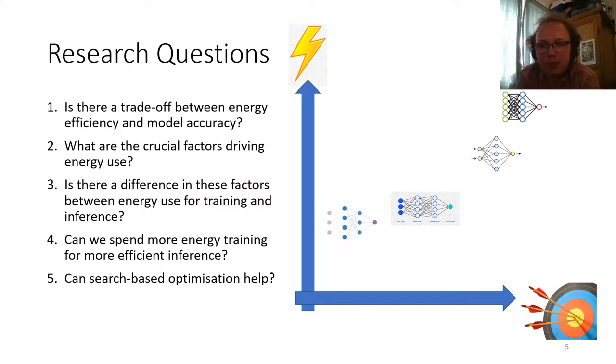So in this study, then we formulated five questions that we really wanted to answer. And the first one was just whether there is a trade off between energy efficiency and accuracy, whether we've got something like the cartoon plot that I've given there, where we go from low energy, low accuracy to high energy, high accuracy, and we're able to kind of walk along that trade off. And then kind of digging a bit deeper, what are the factors that drive that trade off? And is there a difference in those factors between energy for training and for inference? And can we spend more energy training for more efficient inference? That'd be really helpful for things like embedded devices or remote sensors, mobile devices, where we want very efficient inference with the final model. We might be able to invest a lot of effort in training that model before it's deployed to get that. And can we make this hyperparameter search more efficient by using search based optimization?